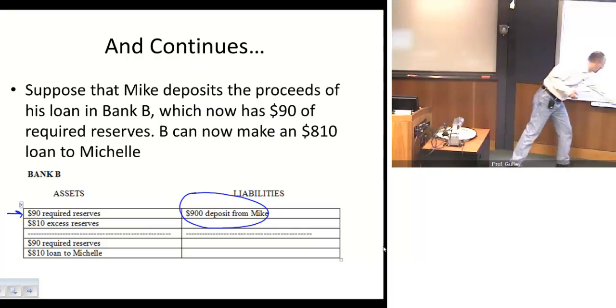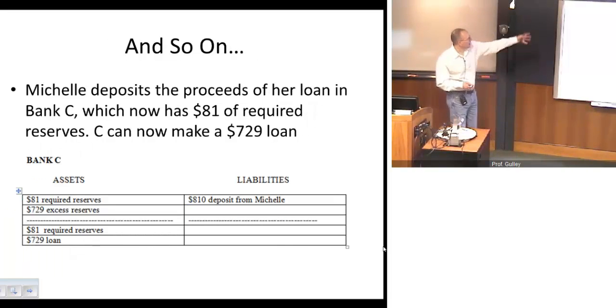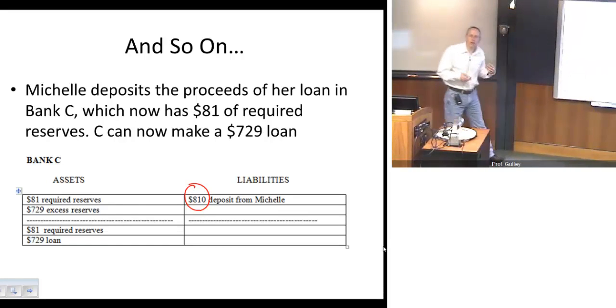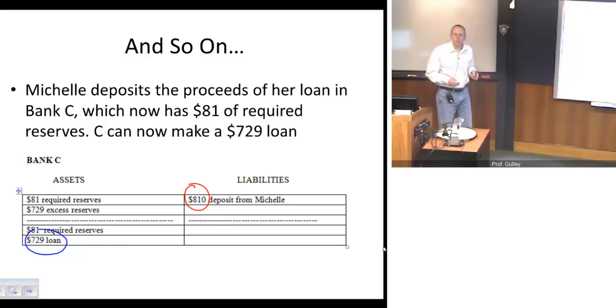So just like before, just like with Bank A, Bank B can now make a loan. Except now, they can't loan out $900. They can only loan out $810. So that's exactly what they do, is they make an $810 loan. Again, the right side of the balance sheet, and this is important, does not change. And what we want to emphasize here is this: That $900 deposit from Mike and your initial $1,000 deposit, those simultaneously exist. And that's going to be important for us. Now we get to Bank C. Bank C gets the $810 deposit. They now have $81 in required reserves, $729 in excess reserves. They can then turn around and make a $729 loan. And so notice, this process simply repeats itself, but on a smaller scale each and every time. So we could carry on here with Bank D, E, F, and so on. But it's all the same process from bank to bank. And that's the crucial thing to understand here.